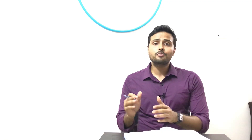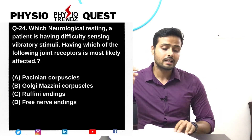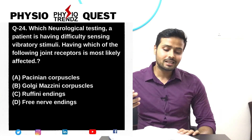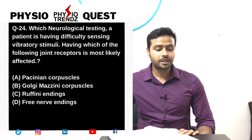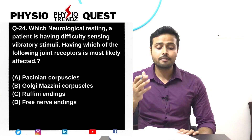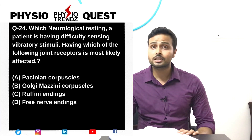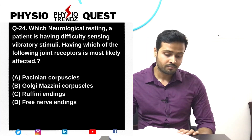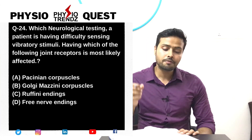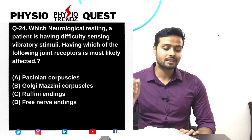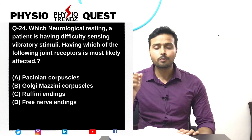Let's start with question number 24, which goes something like this: in neurological testing, a patient is having difficulty in sensing vibration stimuli. So which of the following joint receptors is most likely affected?